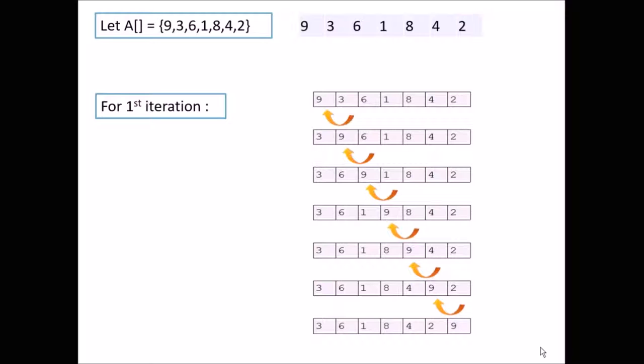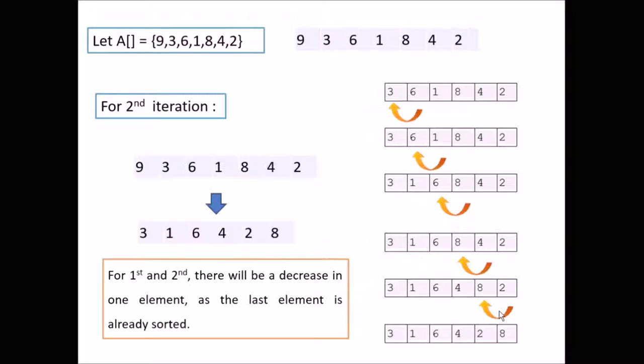For each iteration we will get the largest element in that array towards the right end. In this array 9 is the largest element. So after first iteration we will get the largest element towards the right end of the array, that is the last index of the array. So for second iteration we need not consider this largest element since it is already sorted.